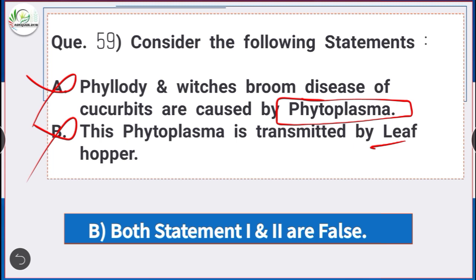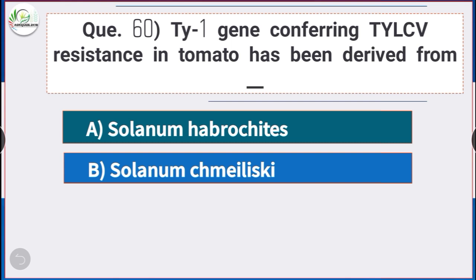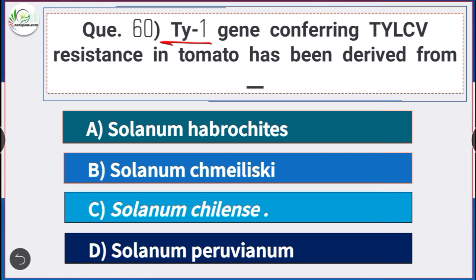Question number 60: Ty1 gene conferring tomato yellow leaf curl virus resistance in tomato has been derived from — answer option C — Solanum chilense. Ty1 gene conferring tomato yellow leaf curl virus resistance has been derived from Solanum chilense.